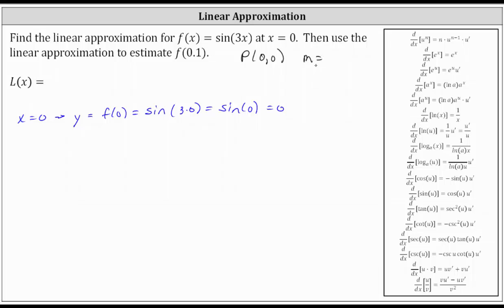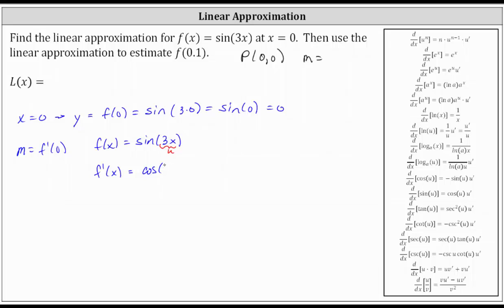Next we need to determine the slope of the tangent line at the point zero comma zero. The slope of the tangent line is equal to f prime of zero. So given f of x equals the sine of three x, we need to find the derivative function, which requires the chain rule where the inner function u is equal to three x. f prime of x is equal to the derivative of sine u with respect to x, which is cosine u times u prime, or in our case the cosine of three x times the derivative of three x with respect to x, which is three.